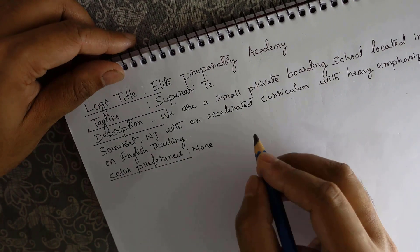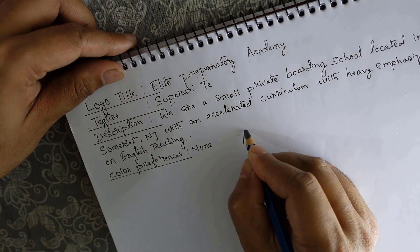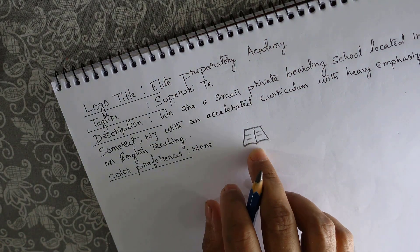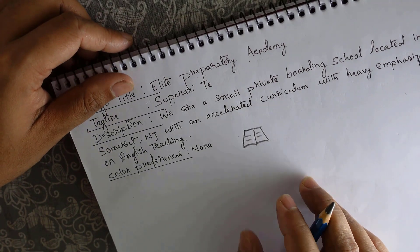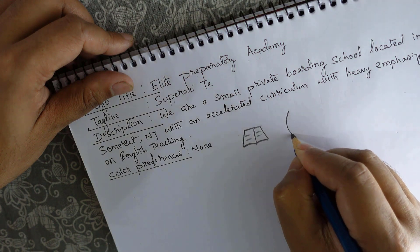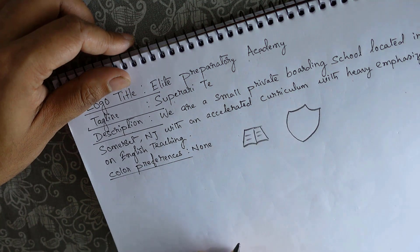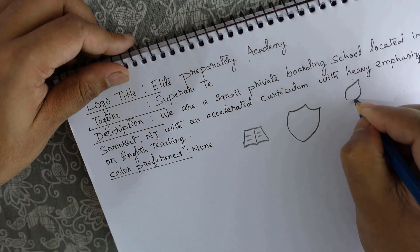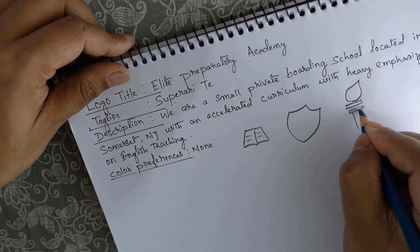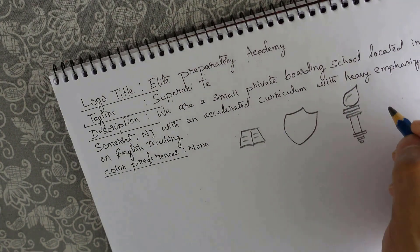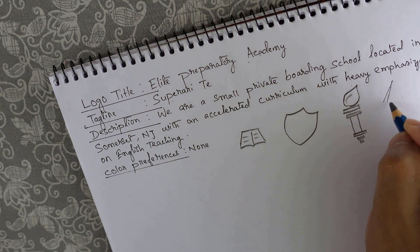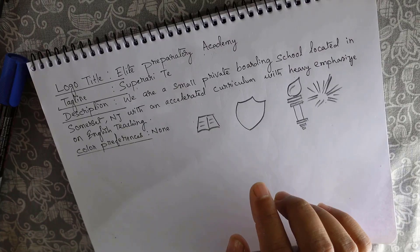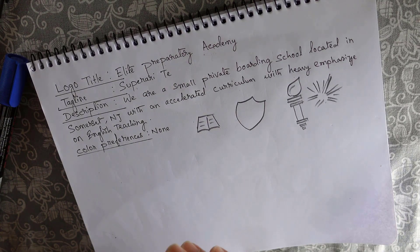When it comes to an academic logo, the first thing that comes to mind is a book, so we can draw a book. For an academy, the book is the most important element. The second element is the shield, which is common in academy logos. The third important element is the flame. When we use this flame, we can also add light rays around it.